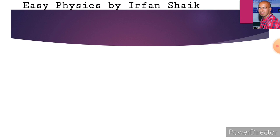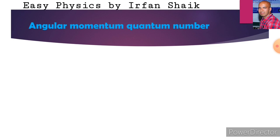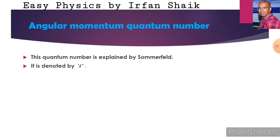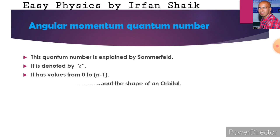Now we move to another quantum number, that is angular momentum quantum number. This angular momentum quantum number was explained by Sommerfeld. It is denoted by the letter small l. The values of small l start from 0 and go up to n minus 1, that is 1 less than the principal quantum number. It gives the information about the shape of an orbital. The angular momentum quantum number gives information about shape, for example s orbital is spherical, p orbital is dumbbell shaped, and d orbital is double dumbbell shaped.